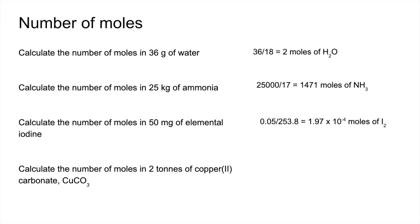And then the final one, we've got to convert the 2 tons of copper 2 carbonate into grams. So 2 tons is 2 million grams, so 2 times 10 to 6, divided by the MR of copper carbonate, and that gives us 16194 to the nearest whole number, moles of copper carbonate.